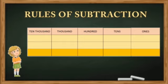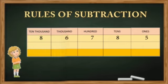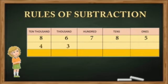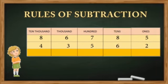The number here is 86,785 — eighty-six thousand seven hundred eighty-five. This number becomes the minuend. Now 43,562 — forty-three thousand five hundred sixty-two — needs to be subtracted; this becomes the subtrahend. We need to find the difference, and as you can see, the numbers are arranged properly so we can easily subtract them.